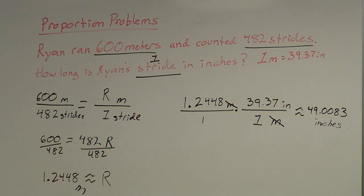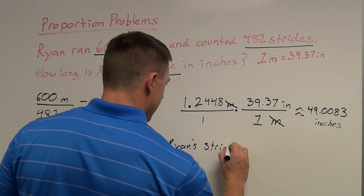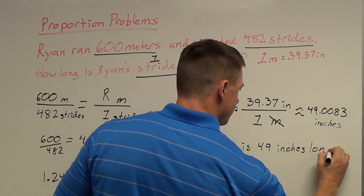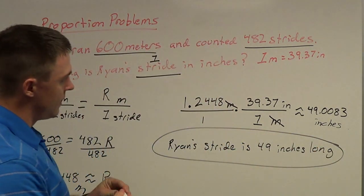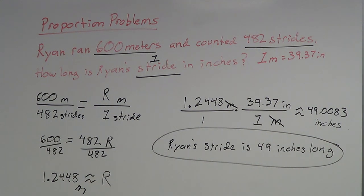49.0083 inches — that is how long Ryan's stride is. After doing all this math, make sure that you write down the answer and explain yourself. Ryan's stride is 49 inches long. The .0083 is too small a fraction of an inch to really use, so I'm not going to worry about that. That's how you figure out how long his stride is when he's running 600 meters.